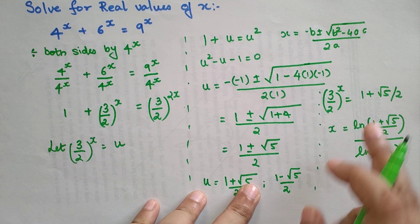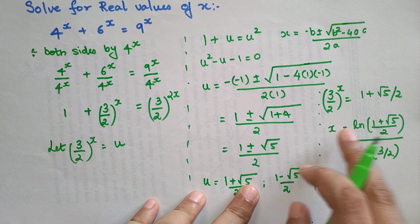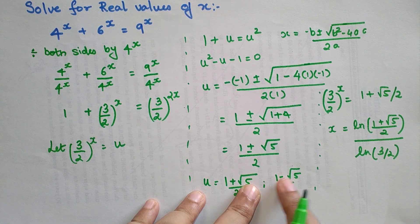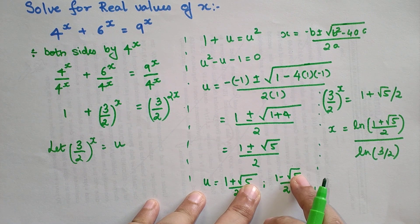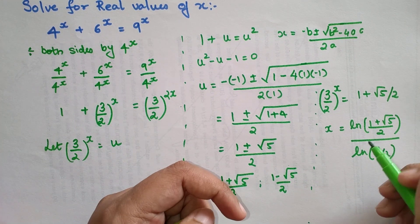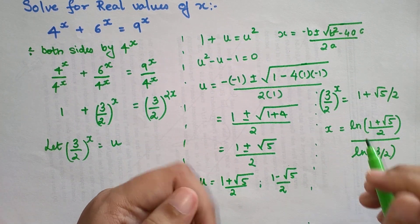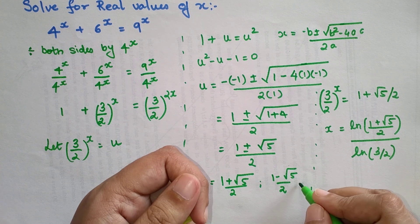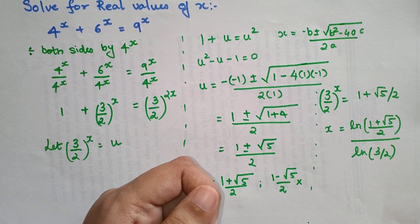But if you look over here in my numerator, I have a log term, and if you look at this value 1 minus root 5, that will get a negative value. We cannot find negative logs, so I will completely discard this particular value.